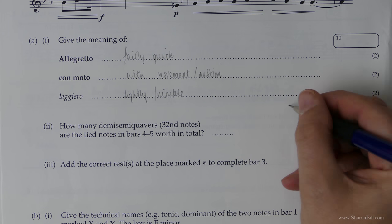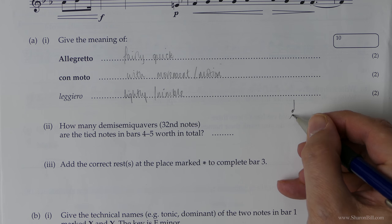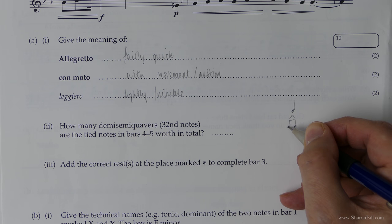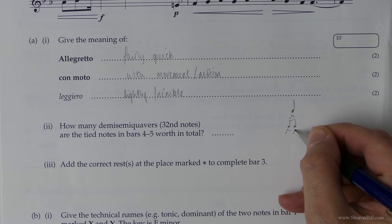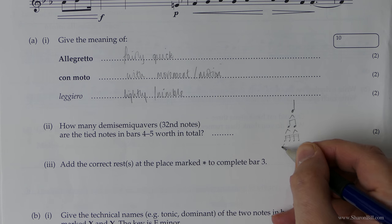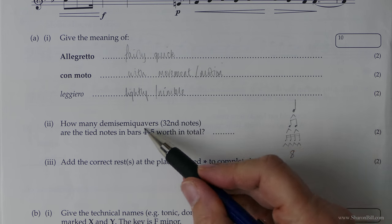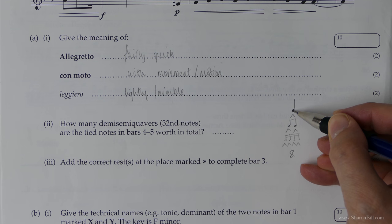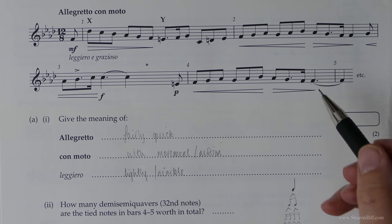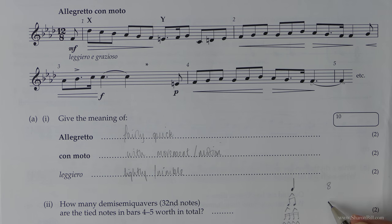So we've got a dotted crotchet or a dotted quarter note and a quarter note. So let's just break this down. Let's see how many there are in a crotchet or a quarter note to begin with. So we know it divides into two quavers or eighth notes. It divides again into four semiquavers or sixteenth notes. And so it divides again into eight thirty-second notes or demi-semiquavers.